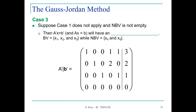Case three: suppose that case one does not apply and the non-basic variable set is not empty. Then the set of linear equations will have an infinite number of solutions. The basic variables are x1, x2, and x3, but the non-basic variables are x4 and x5. Since the non-basic variables are non-empty, that means we can have an infinite number of solutions.